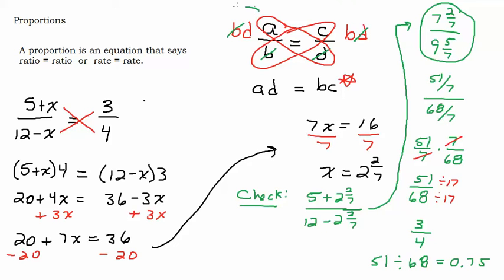So this is your friend right here. This property, whenever you have a proportion, you can take the product, the cross product times the cross product. Make sure you have a proportion when you're using this rule.